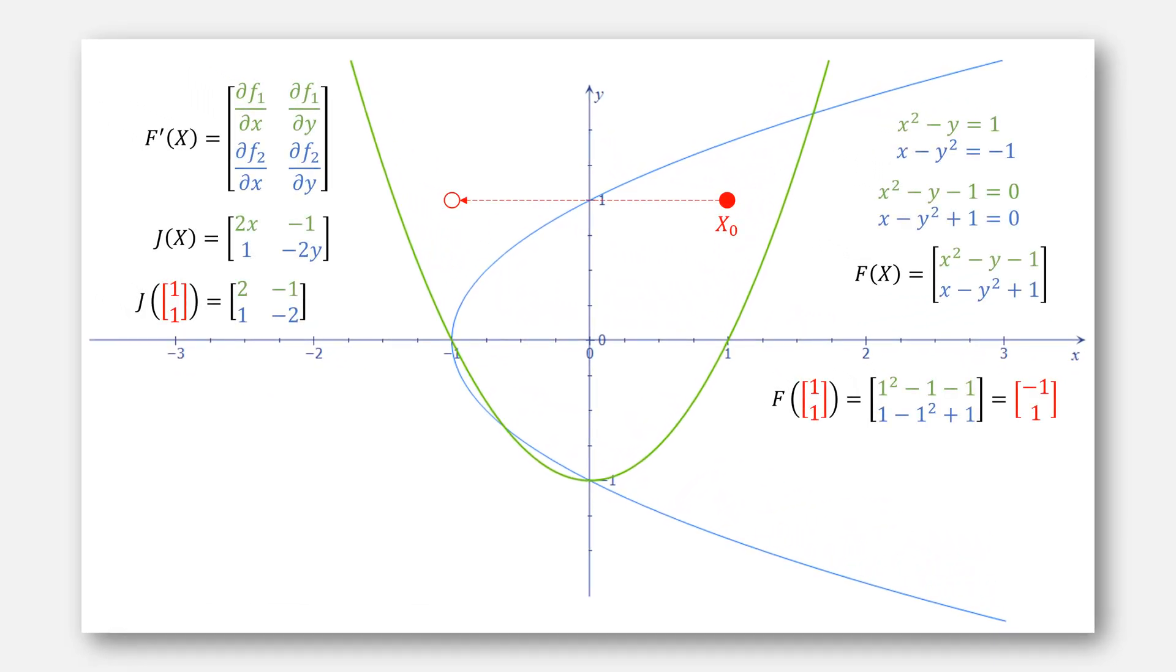This slide should look familiar to those who've seen my earlier video on Newton's method for nonlinear systems, where I evaluate the Jacobian at (1,1). But what is the Jacobian? The technical definition is that it is the partial derivatives of every variable in f against every function in f, but that definition isn't very useful. A better question to ask is, what does the Jacobian do?